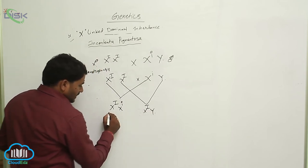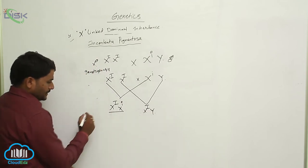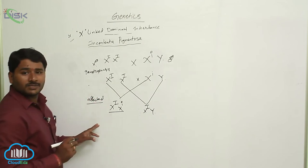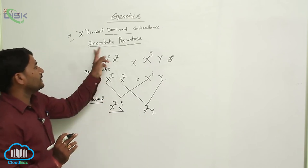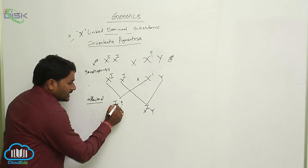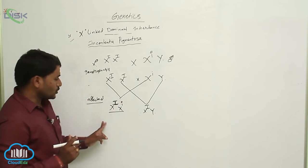Tell me the nature of this female. The female is affected. That is what I am saying. The female will never be a carrier for Incontinentia pigmentosa because one dominant allele is enough to cause the disease.